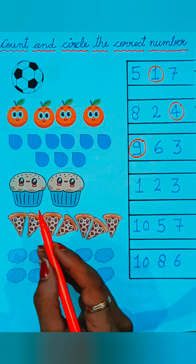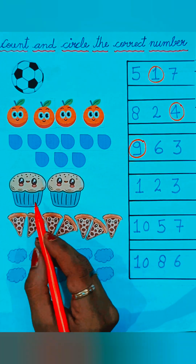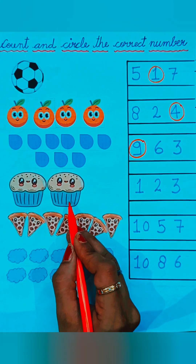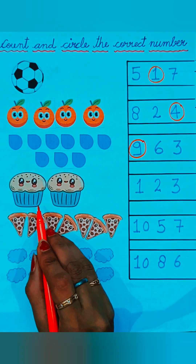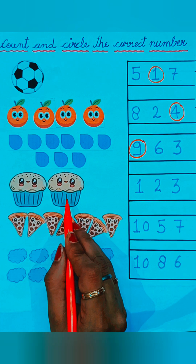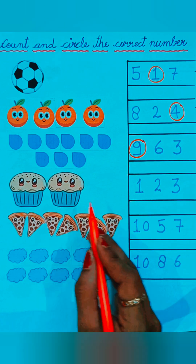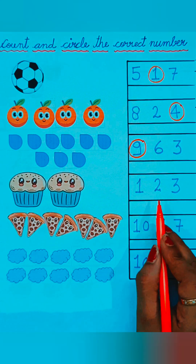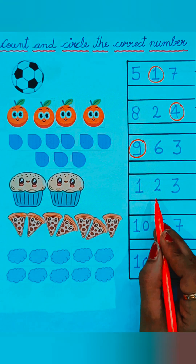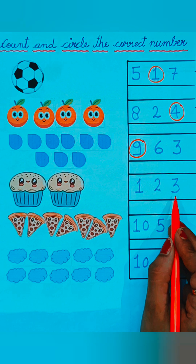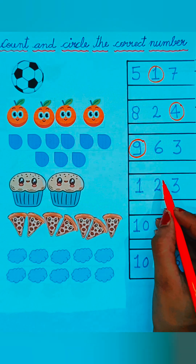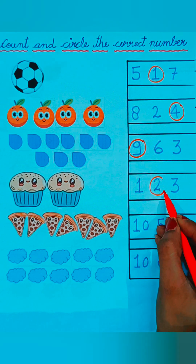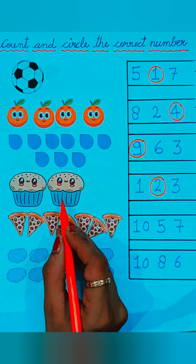Now see the next picture — cupcakes. Cupcakes are given here. One, two — two cakes are given. The numbers are one, two, and three. Which number is correct? Two is correct, so we will circle on number two.